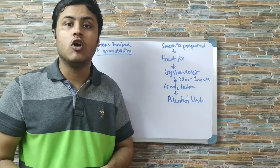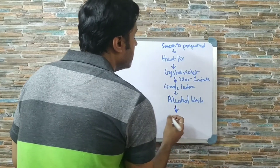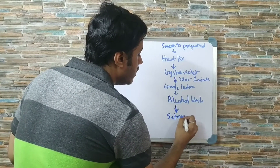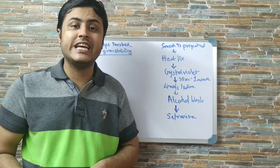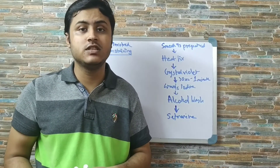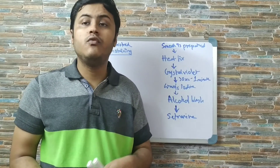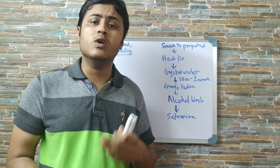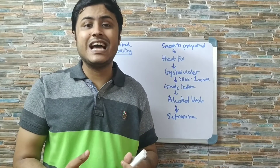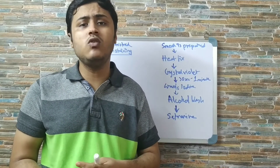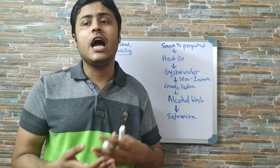After this, we add safranine, which is the counter stain. Safranine is taken up by the gram negative bacteria, staining them red or pink, whereas the gram positive will still remain purple. We then observe the slides under a compound microscope at 10x or 40x magnification.